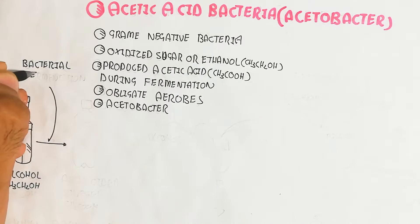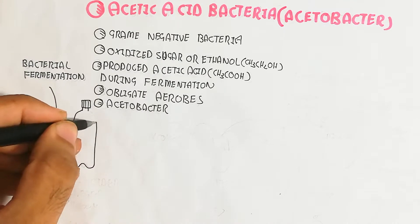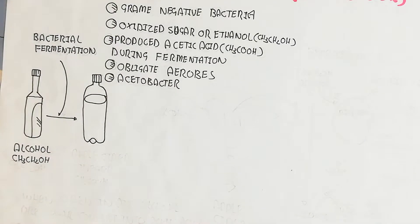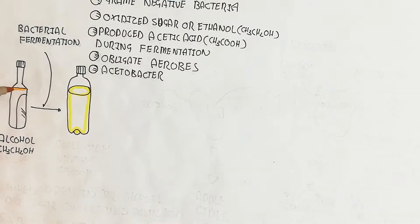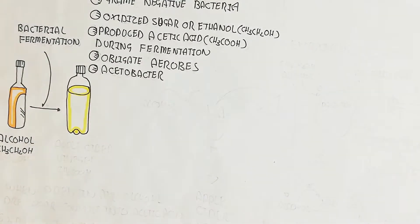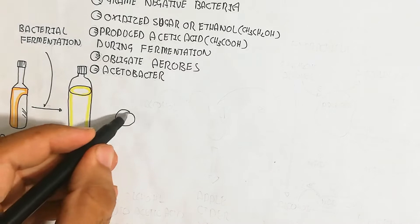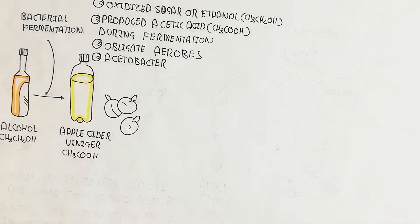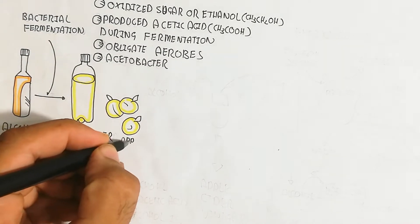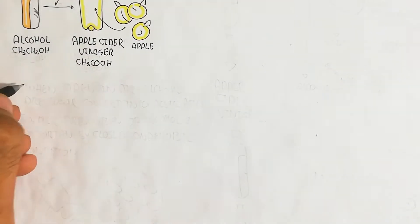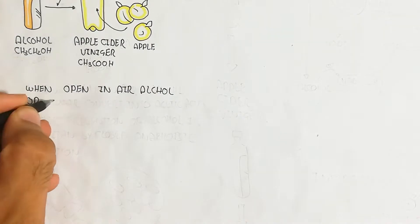When alcohol is exposed to air, bacterial fermentation by acetobacter occurs and apple cider vinegar — acetic acid (CH₃COOH) — is formed. Oxygen is essential for this mechanism, and we will discuss the full molecular and cellular pathway of how oxygen is utilized.